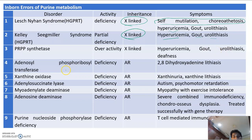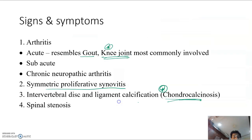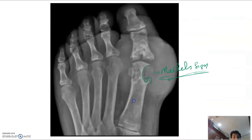PRPP synthetase overactivity → hyperuricemia and gout. APRT (adenine phosphoribosyltransferase) deficiency → 2,8-dihydroxyadenine lithiasis. Xanthine oxidase deficiency → xanthinuria. Adenylosuccinate lyase deficiency → autism and psychomotor retardation. Myoadenylate deaminase deficiency → myopathy and exercise intolerance.